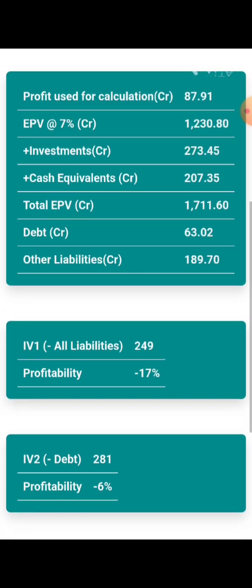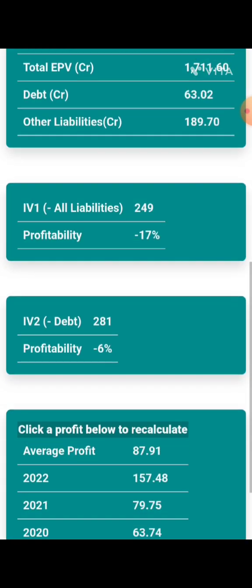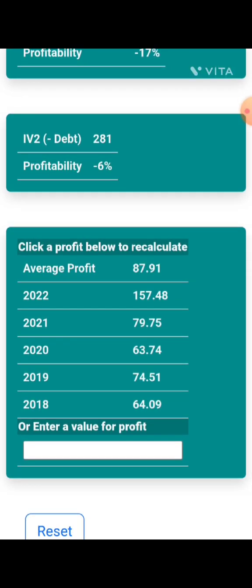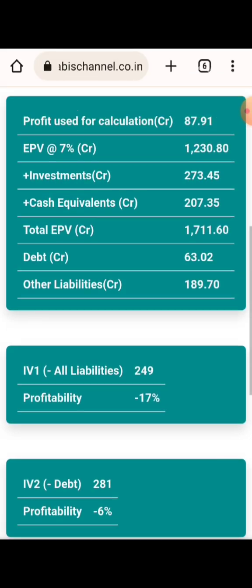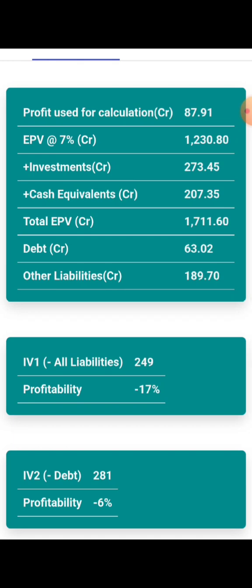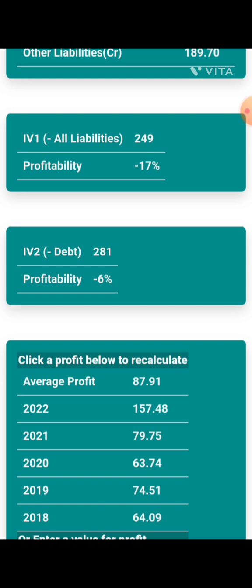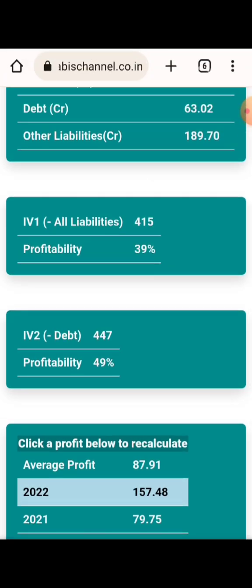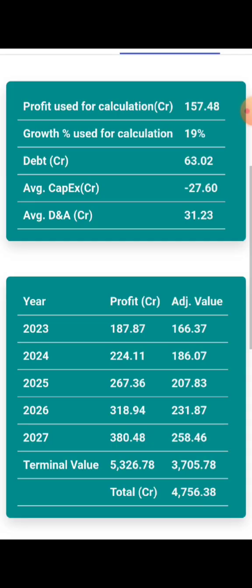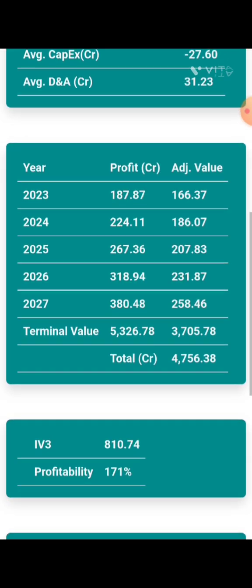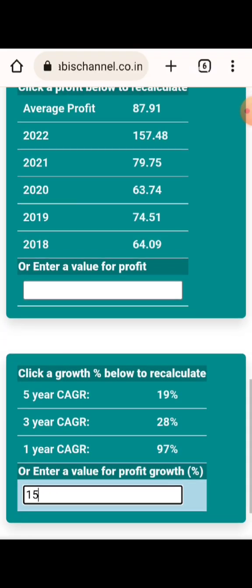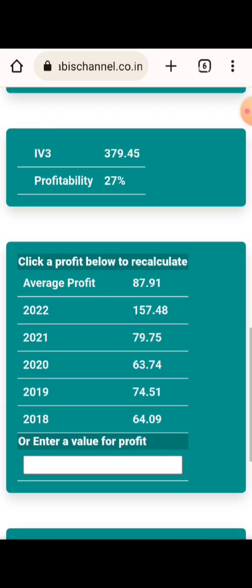EPV method: profit used for calculation is 53 crores. Profit investment is 753 crores, cash equivalence is 100. If we try to calculate, we find the debt is 100. So we will say that the profit is about 415, and we will pay for the debt which is about 457. Now for the Buffett method, we will take 157 profit, with 20% growth — compared to the company that is about 810. The normal average profit is about 87 and 15% growth is about 70.